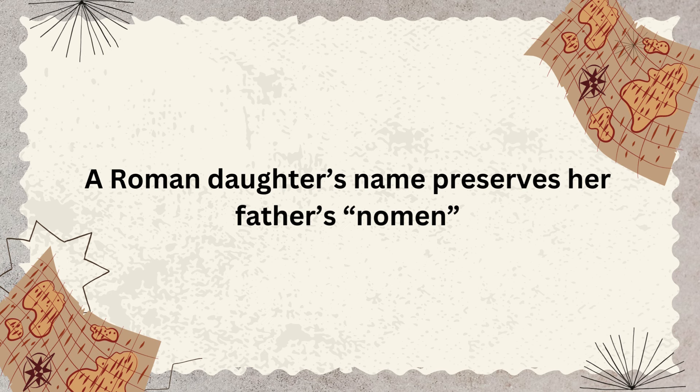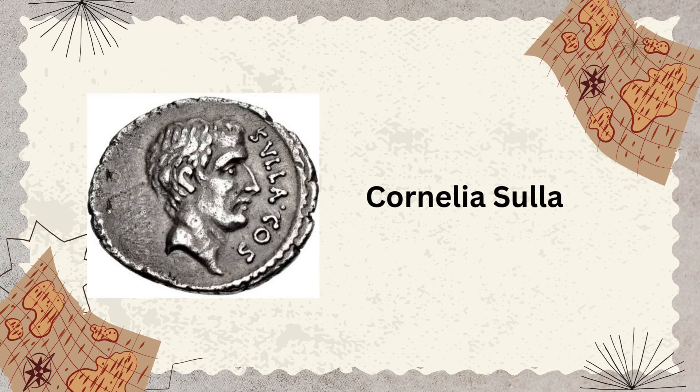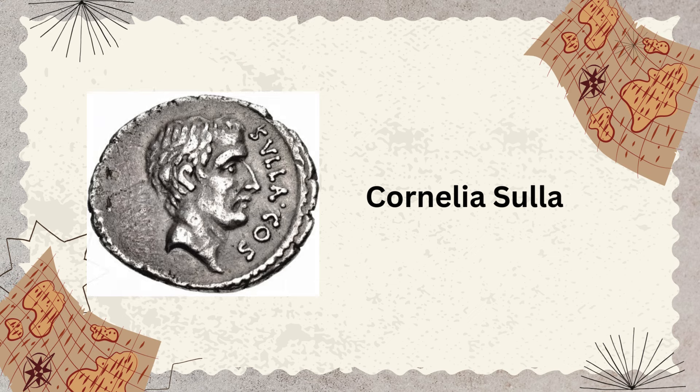By the late Republic, some Roman women even included their father's cognomen in their name, because the cognomen became more and more important. An example is Cornelia Sulla, daughter of the famous general Lucius Cornelius Sulla, where that Sulla carried with her as a way of preserving even more of the father's name. There is this idea of women marrying into other families — you want to keep the family name and not lose it. This is something many people deal with today: if you get married, do you take your spouse's name, hyphenate, or keep your own?